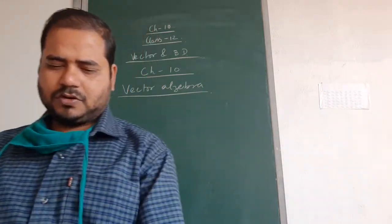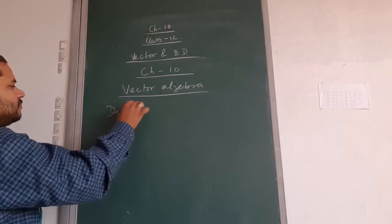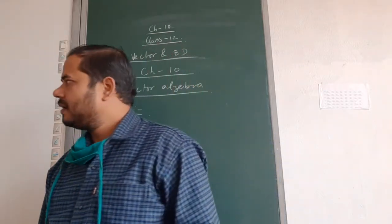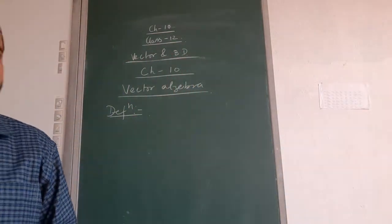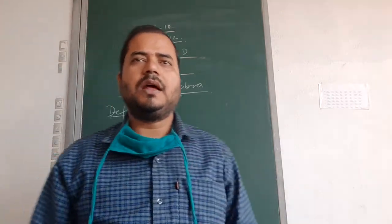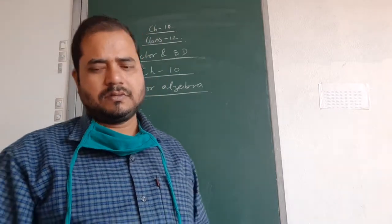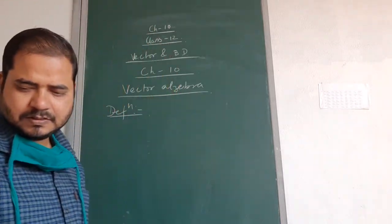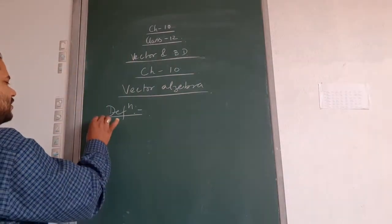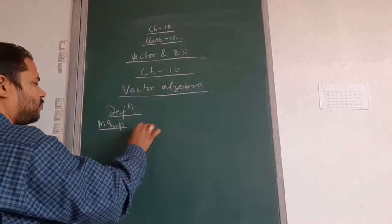First of all we go through the definition. What is the vector quantity? A quantity having magnitude as well as direction is known as a vector. In this, first we see position vector — this is the most important concept.